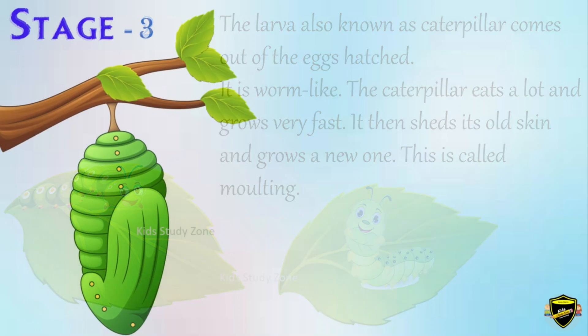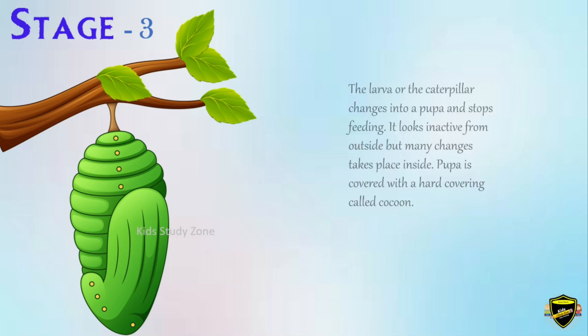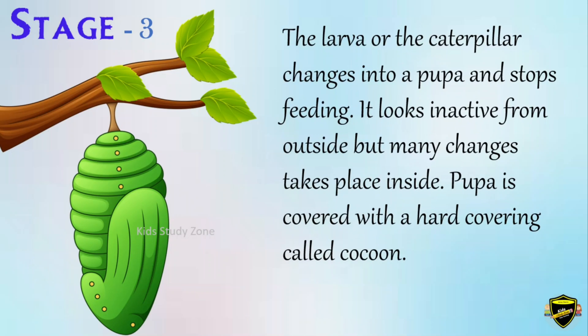Stage 3: the larva or caterpillar changes into a pupa and stops feeding. It looks inactive from outside, but many changes take place inside. The pupa is covered with a hard covering called a cocoon.